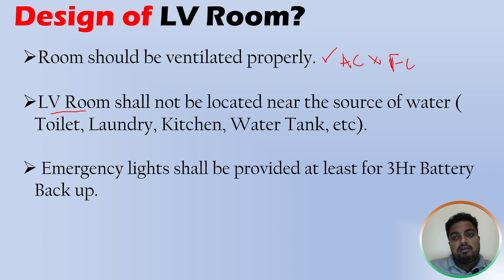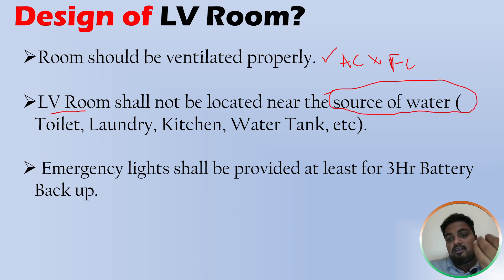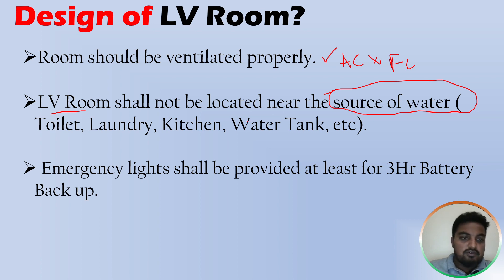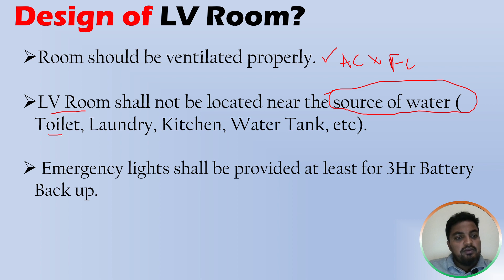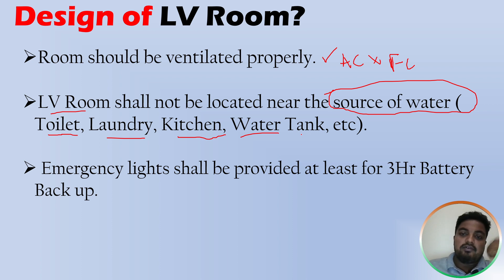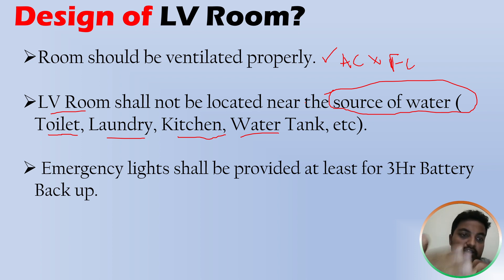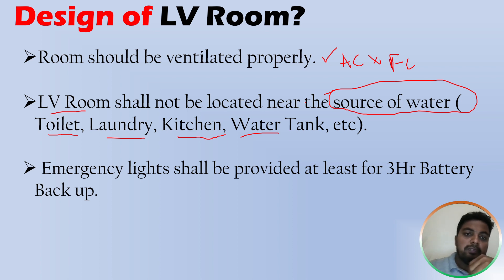The next point: the LV room shall not be located near any source of water. A source of water means any point that supplies water — toilets, laundry, kitchen, water tanks, or water sinks. The LV room should not be designed near any of these. It should be located far away from all sources of water.